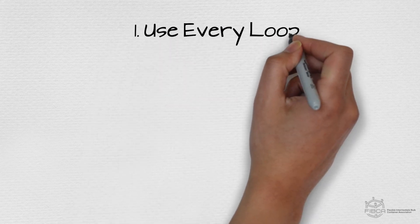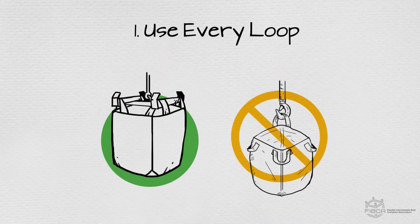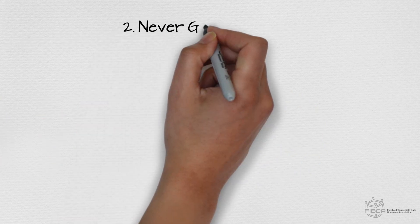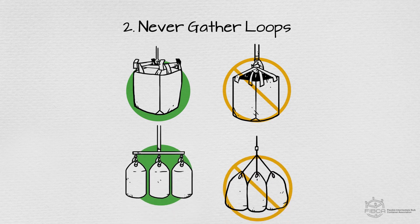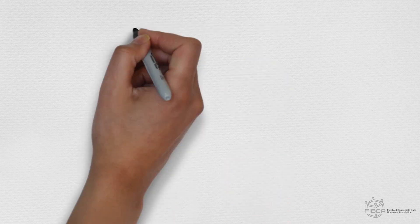1. Never suspend an FIBC using fewer lift loops or sleeves than provided. 2. Never gather loops to lift with one hook, unless your FIBC is specifically designed to do so.